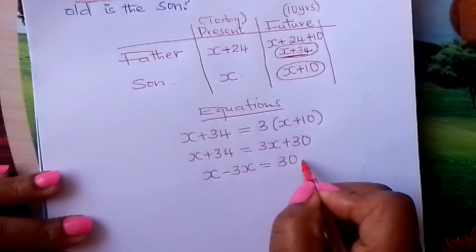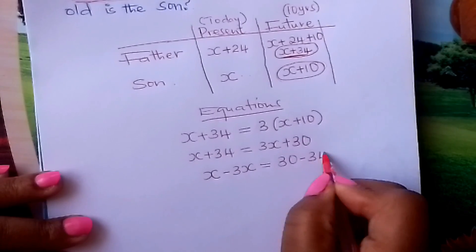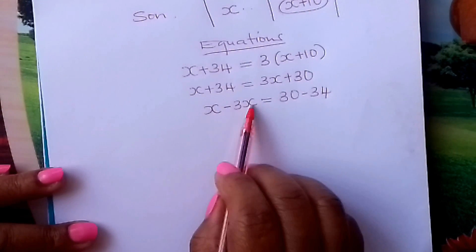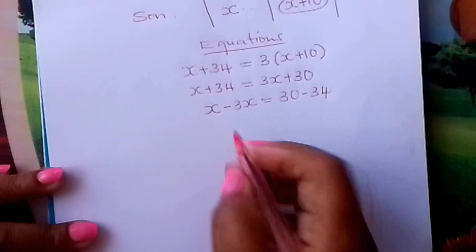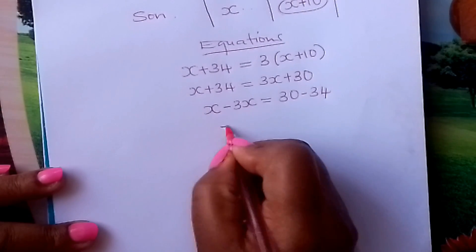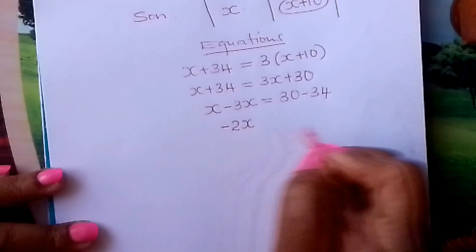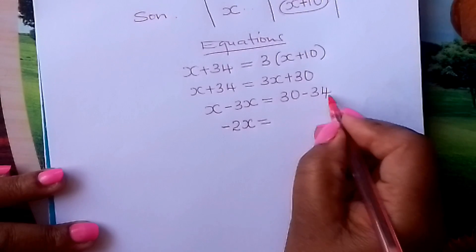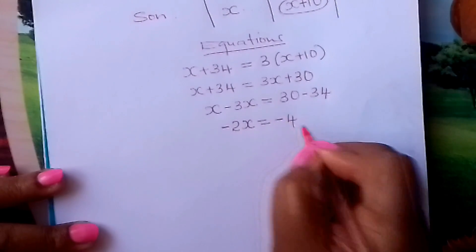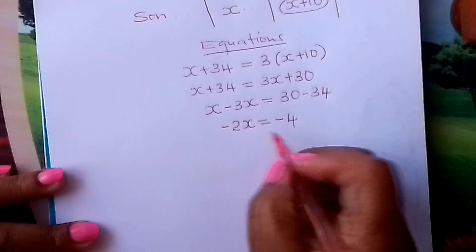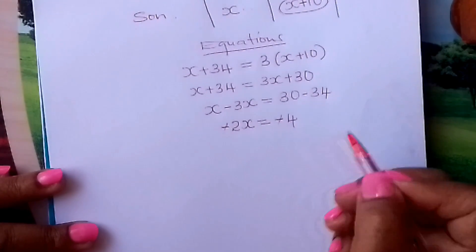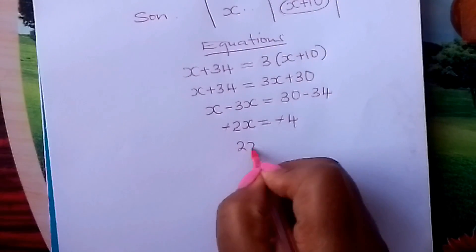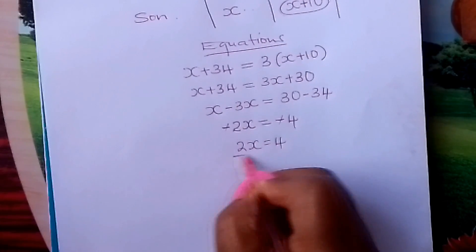Taking this to the other side, it becomes minus 34. From there we do the subtraction: X minus 3X gives us negative 2X, and 30 minus 34 gives us negative 4. From there, you can drop these negatives because they are on both sides, so we have 2X equals 4.